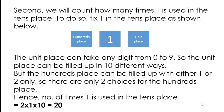Second, we count how many times 1 is used in the tens place. Fix 1 in the tens place. The units place can take any digit from 0 to 9, so it can be filled in 10 different ways. The hundreds place can only be 1 or 2, as in the previous case, giving only 2 choices. Hence, the number of times 1 is used in the tens place equals 2 × 1 × 10 = 20.